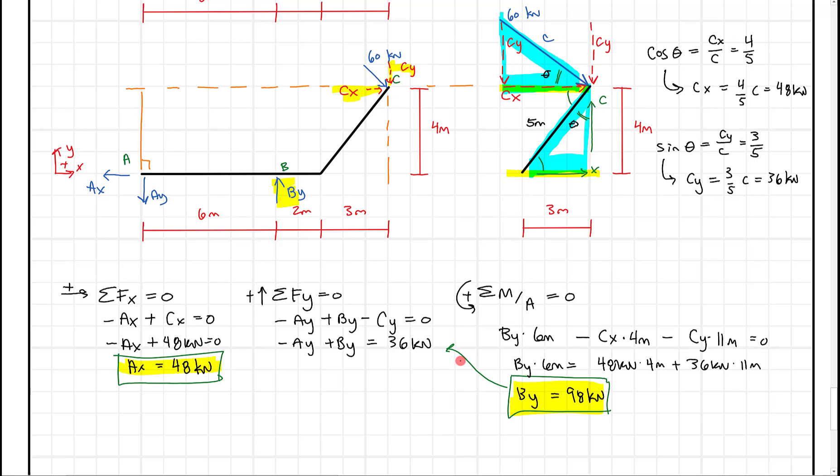So once we get that answer, we can highlight it, put a box around it. That's answer number two. And now once we know that, we can bring this back up to this equation, plug it in, and finish our problem. So if I do that, I'm going to get Ay equals By minus 36 kilonewtons. I'll get Ay equals 98 kilonewtons minus 36 kilonewtons, which comes down to Ay equals 62 kilonewtons. So that's our answer. We can highlight it, put a box around it, and solve this problem correctly.